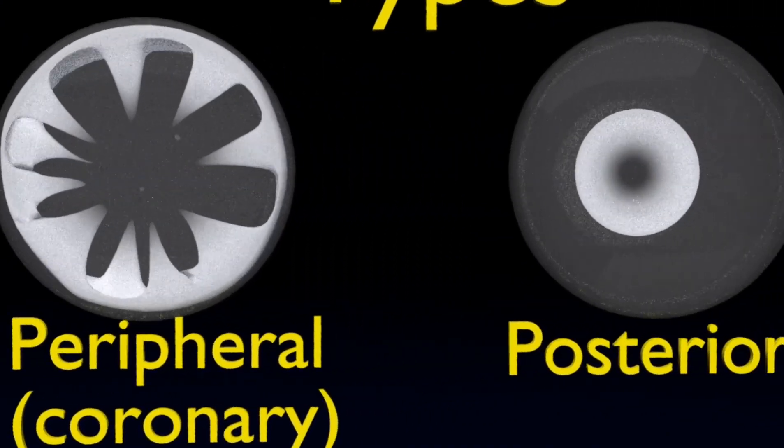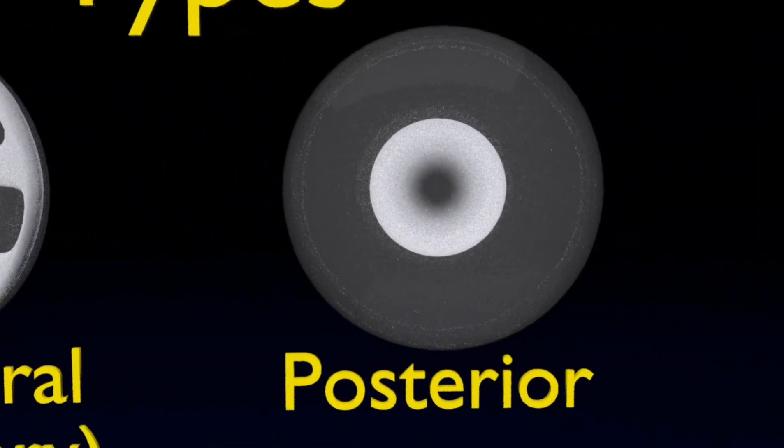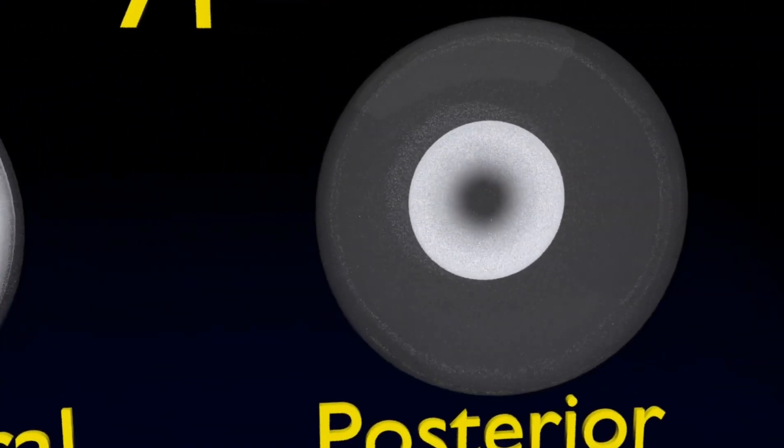The posterior cortical cataract: The opacity involves the back part of the lens but does not touch the capsule.